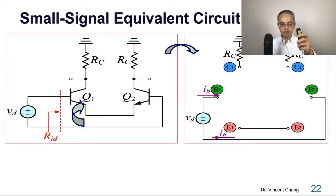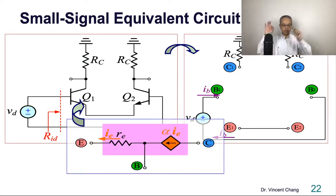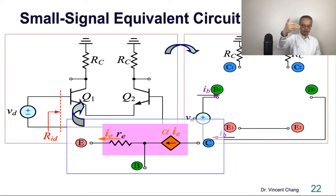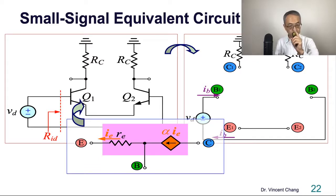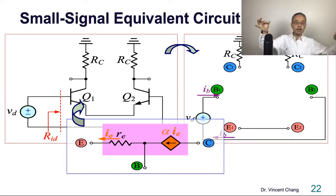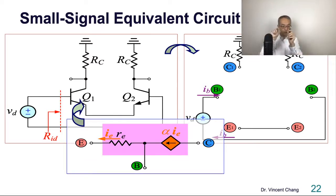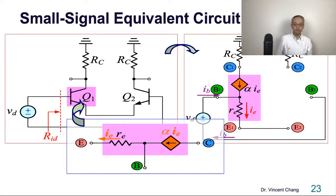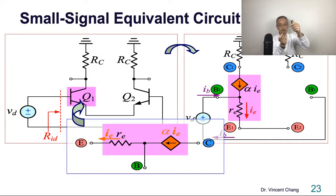Here's the T-equivalent model: emitter, base, collector. The resistance RE is between the emitter and base. Looking into the base, RE is multiplied by one plus beta. The collector current is a current-controlled current source: alpha times IE from collector. So: emitter, base, collector. You rotate this 90 degrees and place it on the Q1 spot — no problem. You just copy and paste. But what about the other transistor?